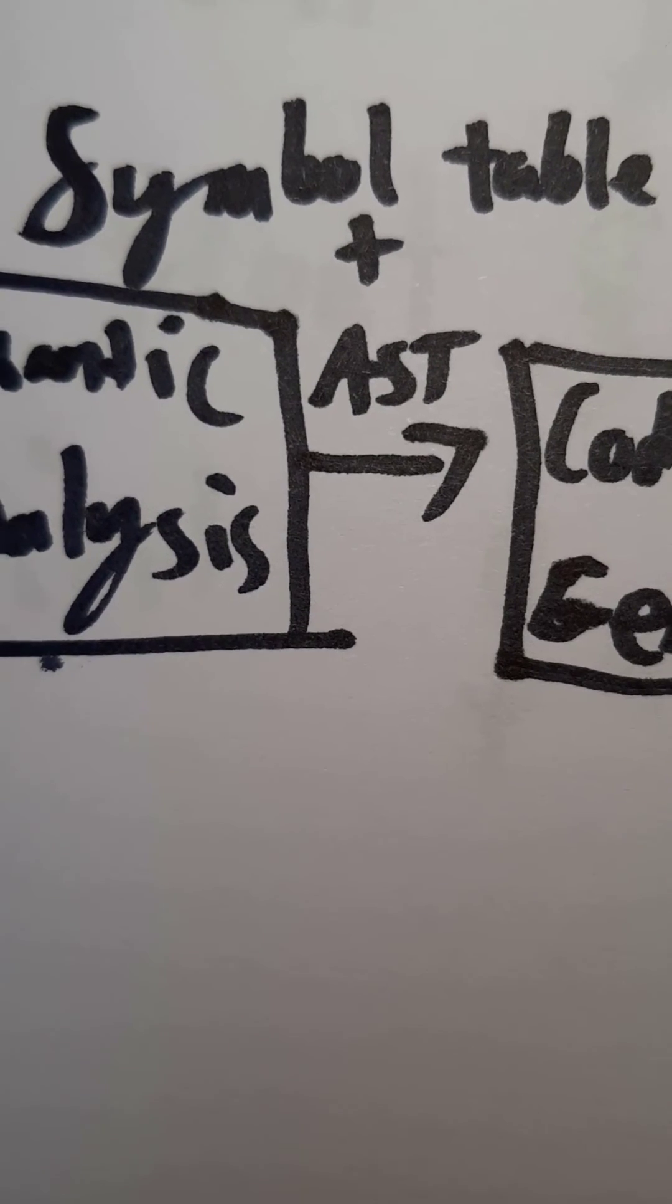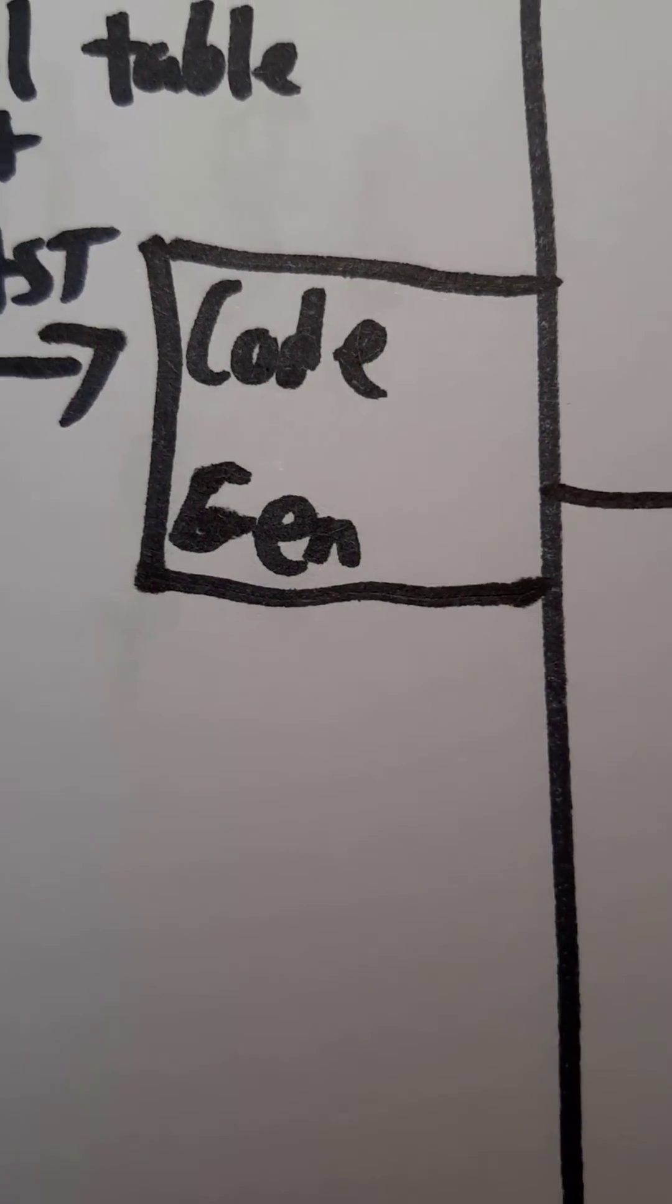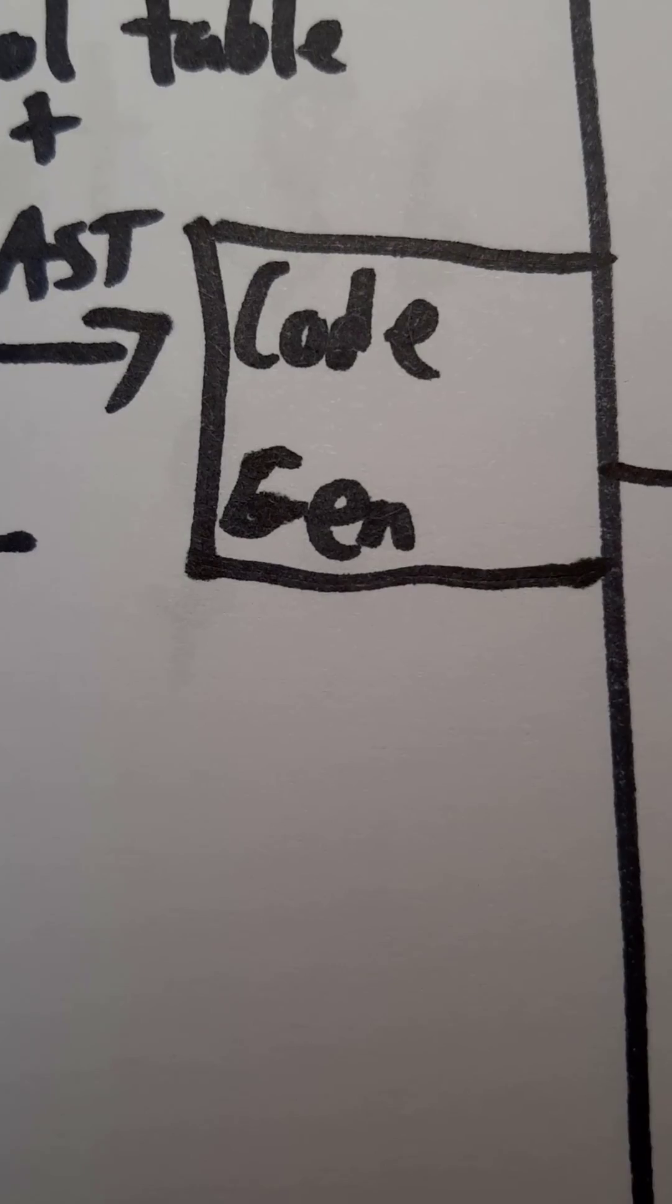The final stage of our front end is armed with our symbol table and abstract syntax tree. We're going to walk over the AST to do code generation and get our intermediate representation. The next part we'll look at the middle end and back end.